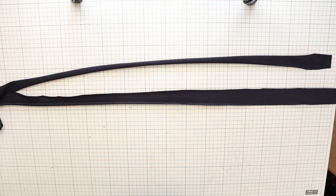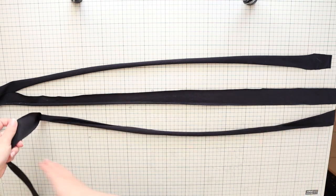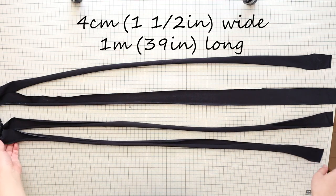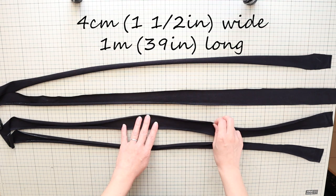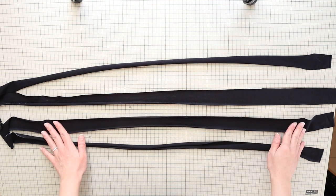From the leftover fabric, cut two long strips that are 4 centimeters or 1.5 inches wide, and about 1 meter or 39 inches long. And that's it! Let's start sewing!